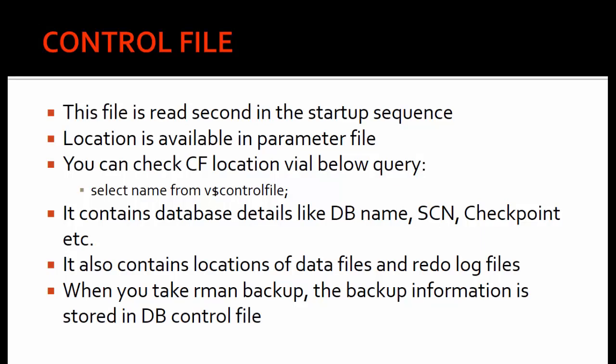The control files contain database details like the name of the database, the SCN number (System Change Number), and the checkpoint number. The control file also has the locations of data files and redo log files inside the database. When you take an RMAN backup, the backup information is stored in the control file. The control file is very important — it governs the database. When you start the database, Oracle cross-verifies the SCN number in the control file against the data file headers. If the SCN number matches everywhere, your database will open cleanly.